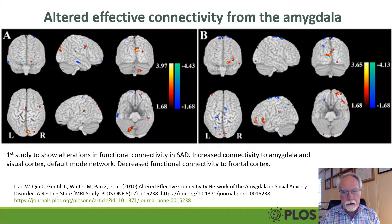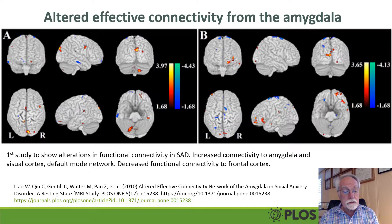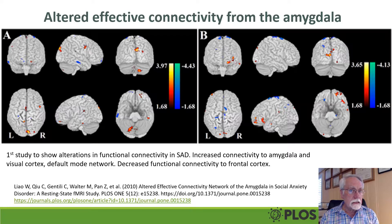Functional connectivity is altered in social anxiety. There's increased connectivity to the visual cortex and to the default mode network — what your brain is thinking and doing while you're doing nothing.